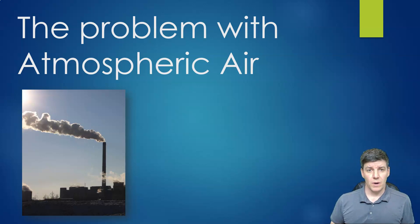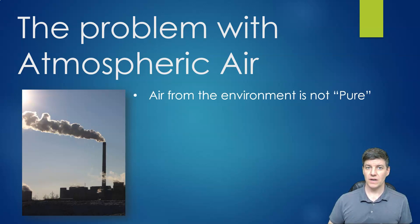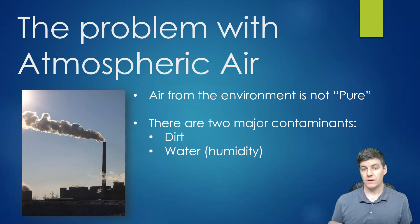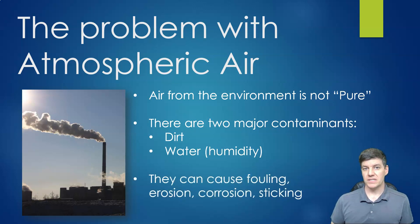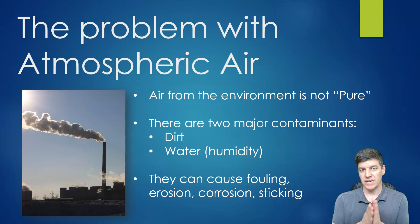Now that we know the components in that system, let's talk about the air coming in. We have two problems with atmospheric air — it's not just pure air. Two major contaminants are dirt and humidity or water. Air coming into the compressor has some humidity and some dirt with it. Both can cause problems inside air systems: erosion, corrosion, fouling of heat exchangers, and components sticking or not moving freely.